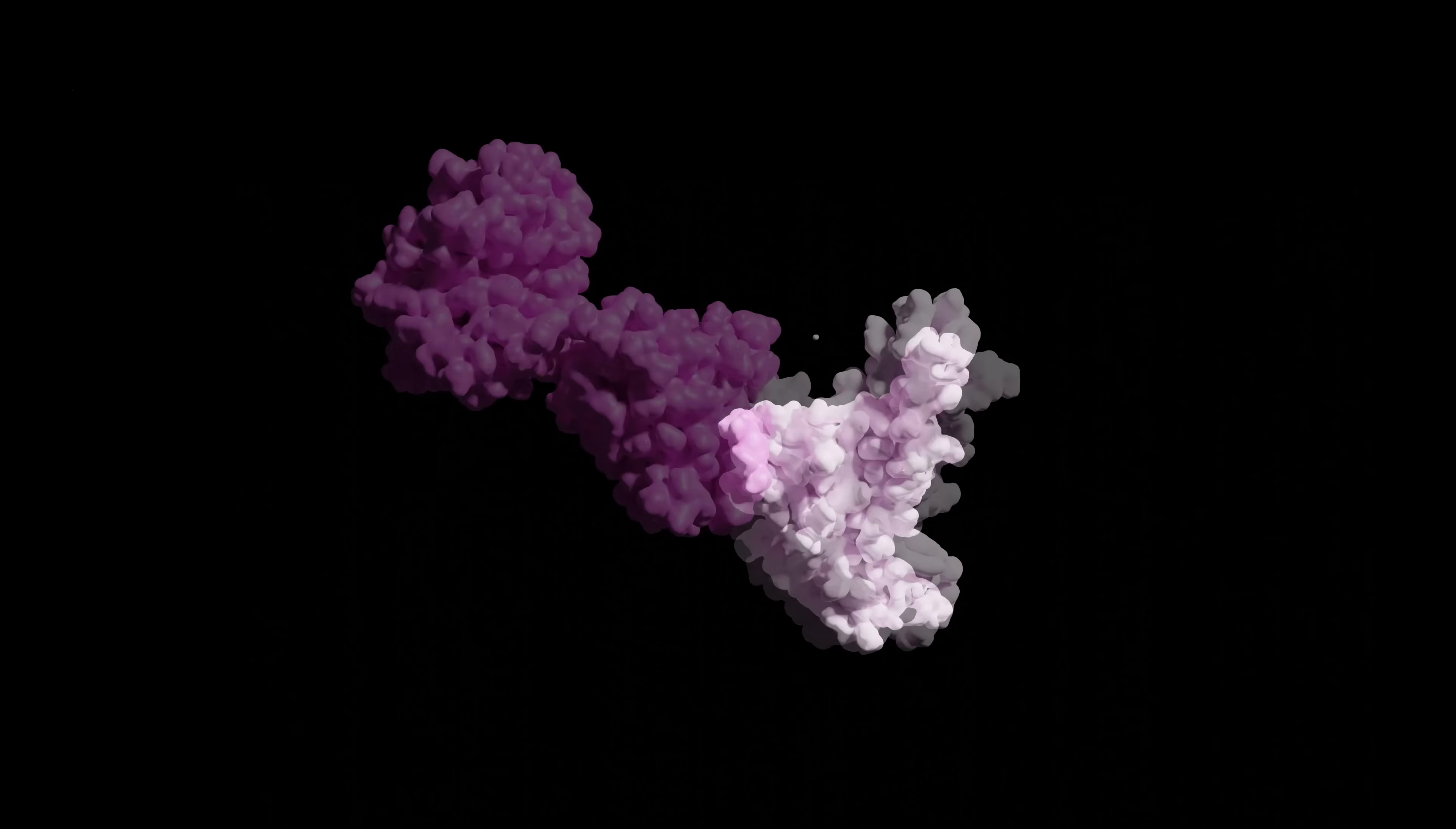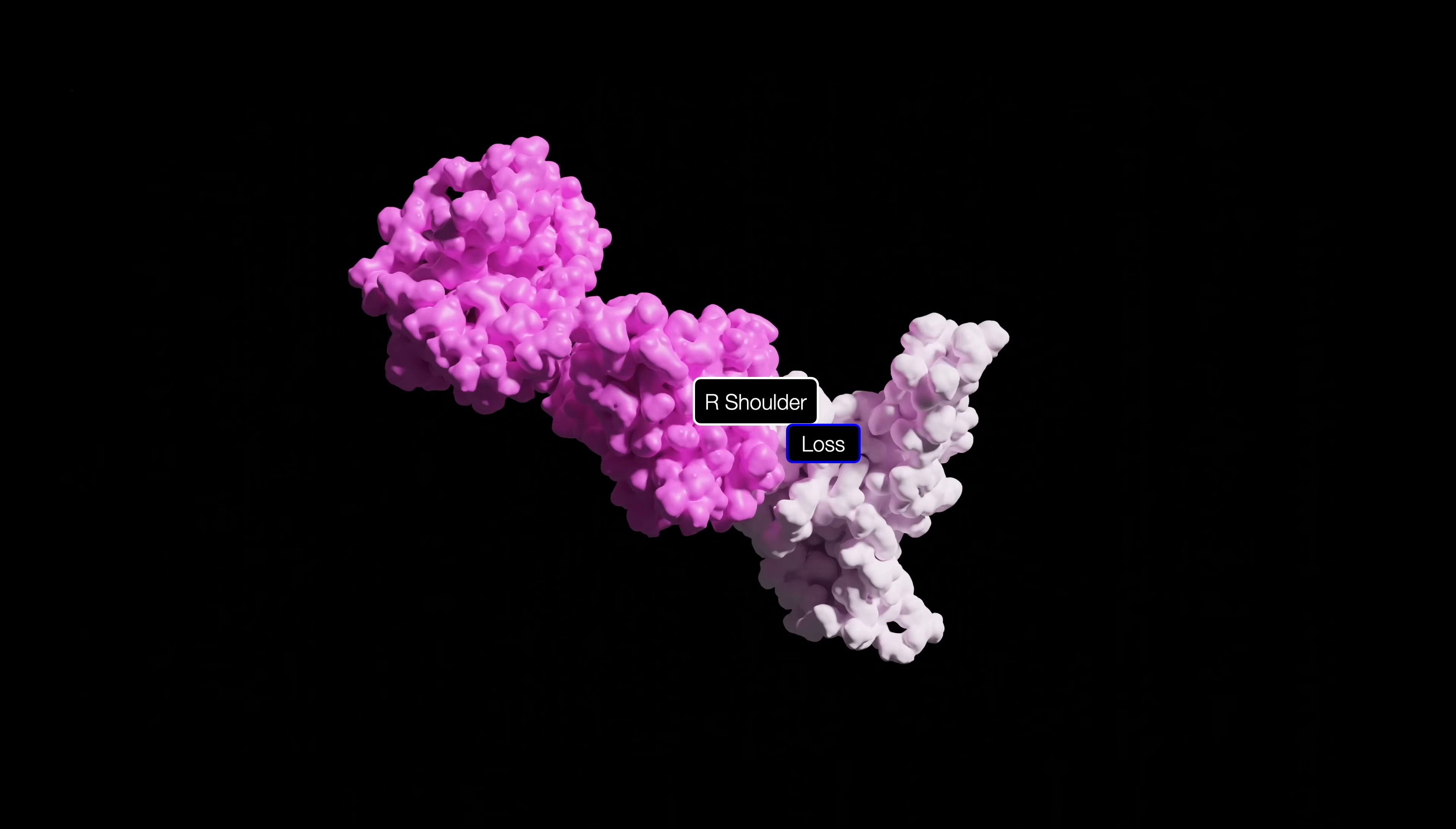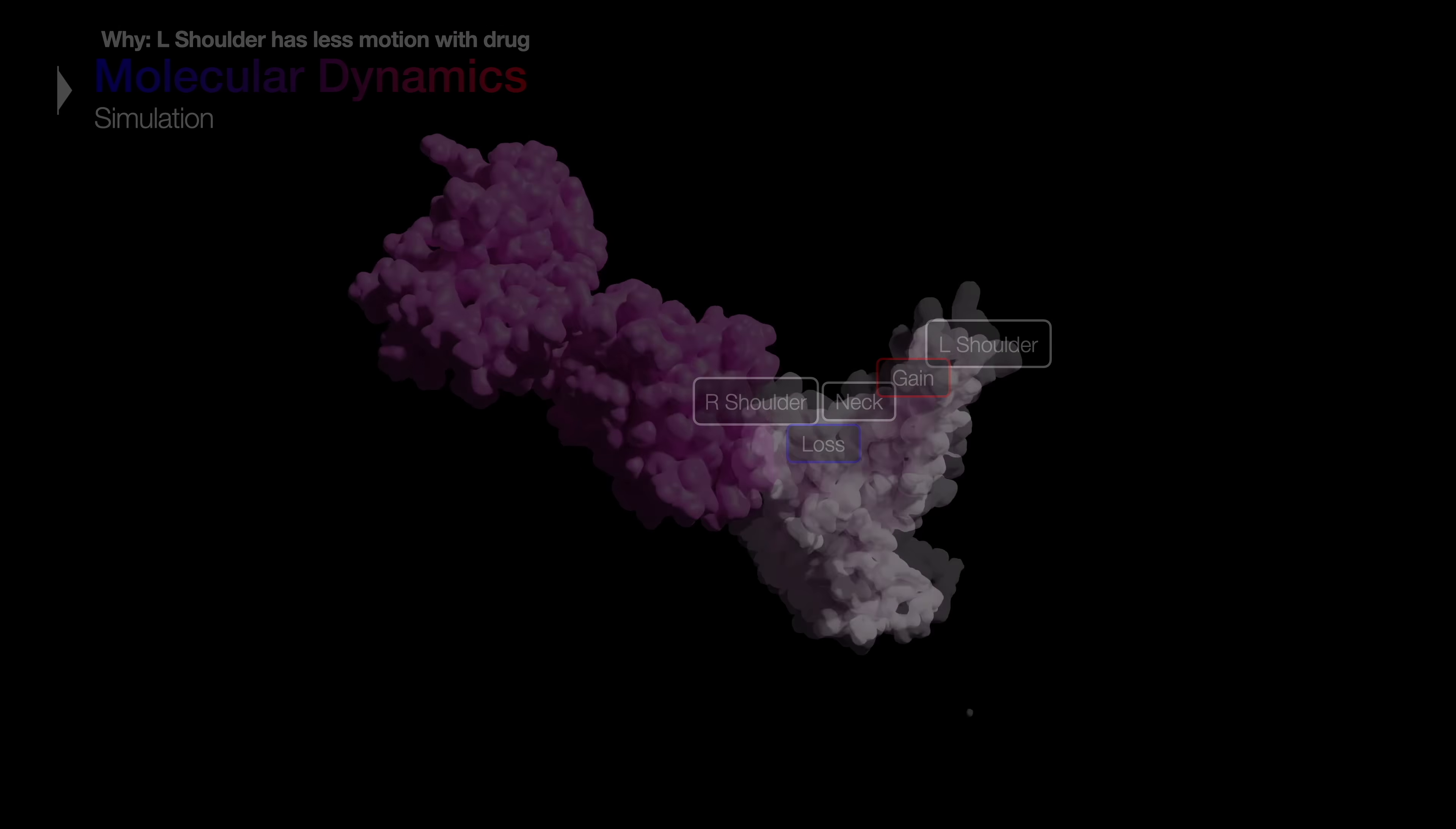The signal is sent from the right shoulder to the left. The binding of the drug disrupts the signal relay, causing the left shoulder to become stiffer and more closed off, preventing it from binding to the ACE2 receptor.